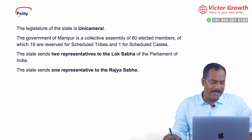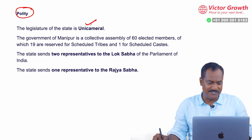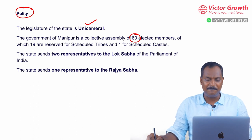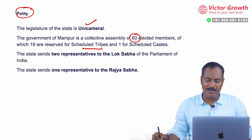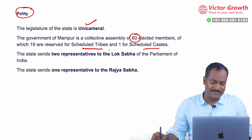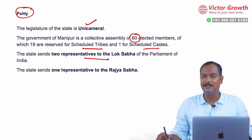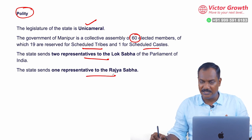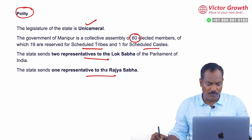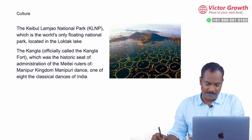If you look at the polity of Manipur, it is unicameral, meaning only one house. There are 60 members elected directly by the people, with reservation for Scheduled Tribes and Scheduled Castes. There are two members representing Manipur in the Lok Sabha and one member representing Manipur in the Rajya Sabha.